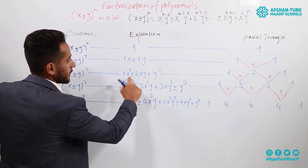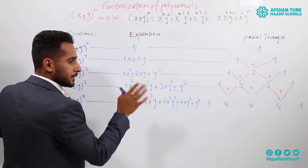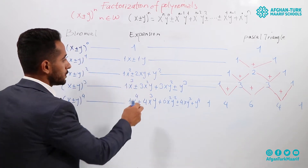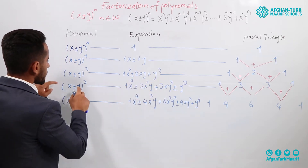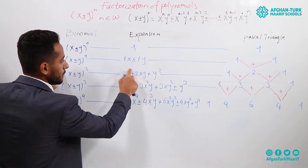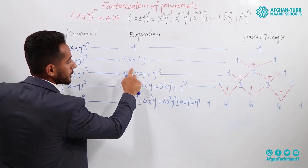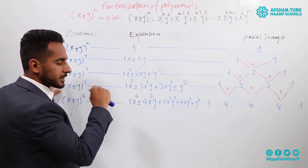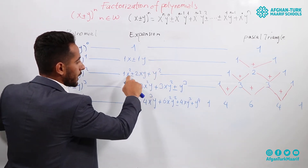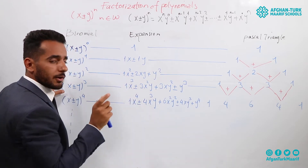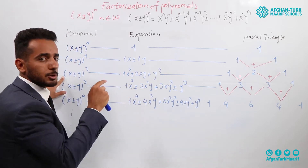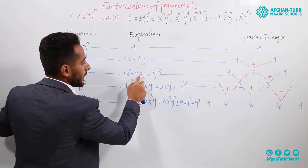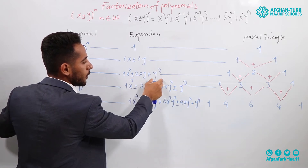If it is negative, the second term will be negative. Now I will tell you how we find the coefficients. First we check the variables. The first term's x power is 2, the second term x will be 1 — it is descending: 2, 1, 0. At the first term we don't have y, meaning y to the power of 0. The second term has y to the power of 1. The third term has x to the power of 0 and y to the power of 2.